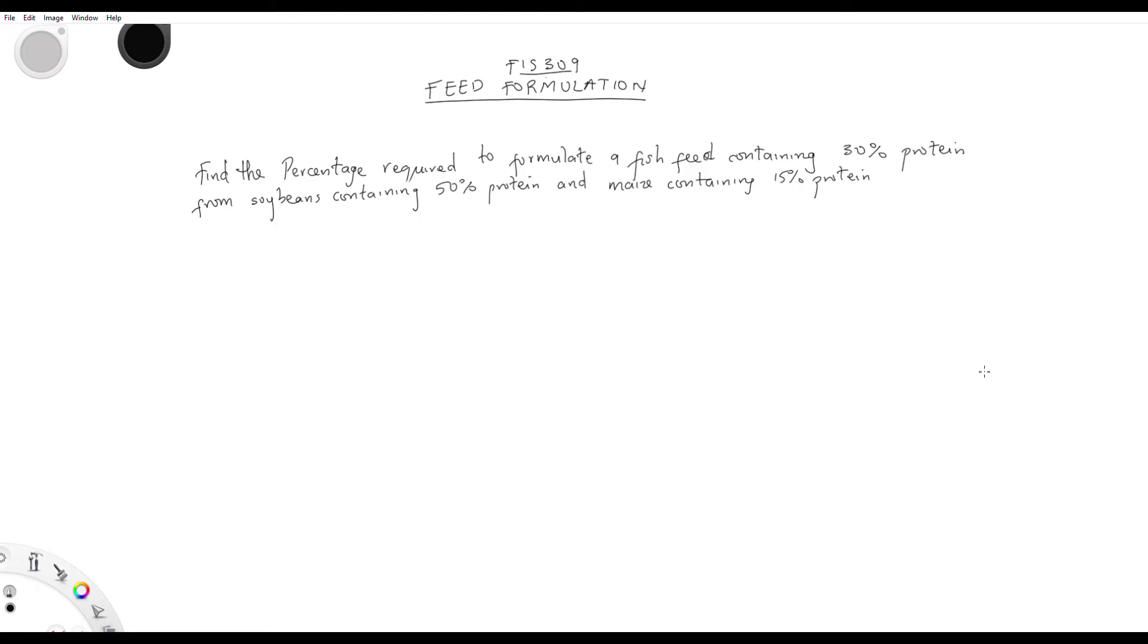Let's take for example: Find the percentage required to formulate a fish feed containing 30% protein from soybeans that has 50% protein and maize that has 15% protein. Basically, what we're trying to say is you're trying to formulate a fish feed where the overall protein percentage should be 30%. We're using soybeans that has 50% protein and maize that has 15% protein. Now I'm not saying soybeans has 50% protein or maize has 15% - I just assumed. These things you will be told in your practical class. As I said, always take note of whatsoever you are told in your practical classes.